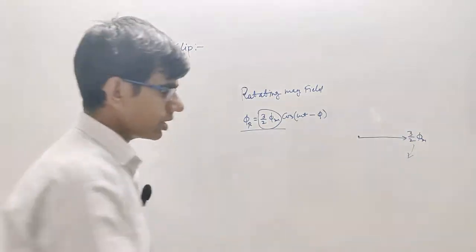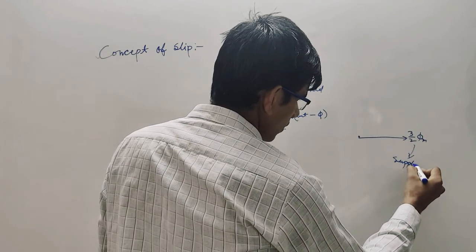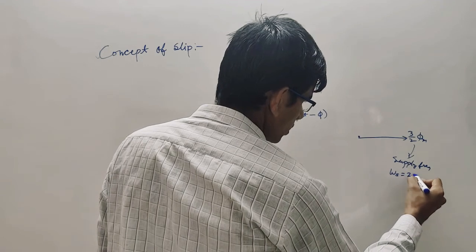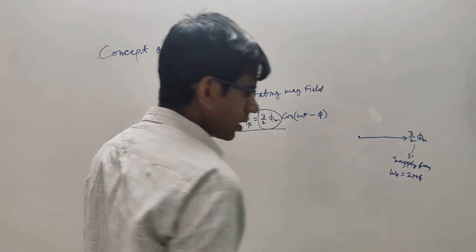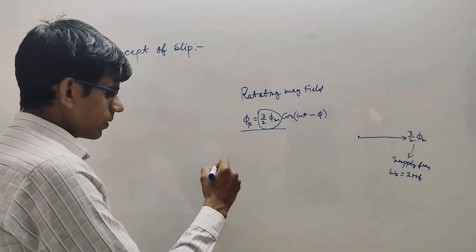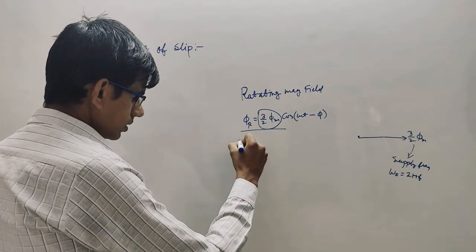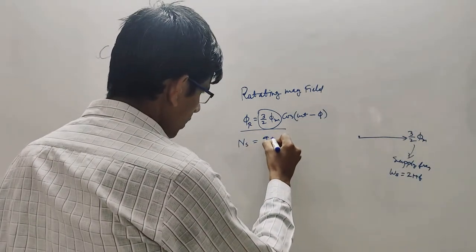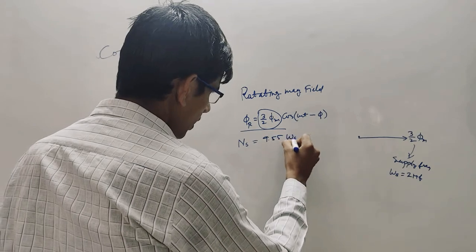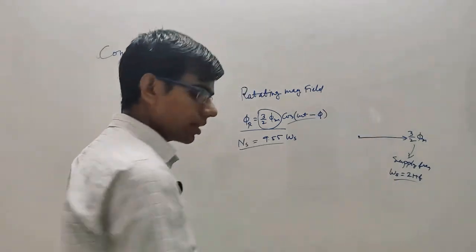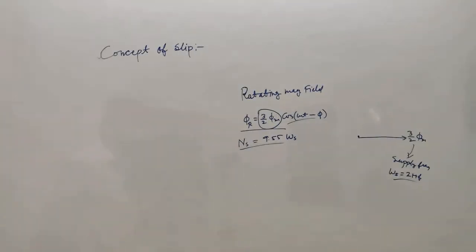The speed of rotation is equal to the supply frequency. This is omega_s, and omega_s is further equal to 2 pi f. You can convert this into synchronous speed — this is equal to 9.55 times omega_s. All these things were explained in detail in the previous lecture, so I am not going to repeat them again.